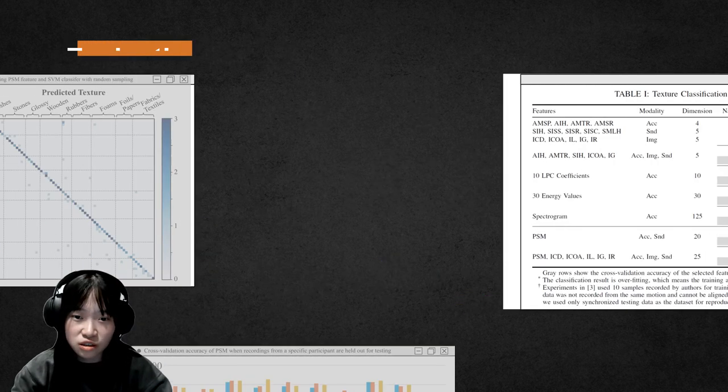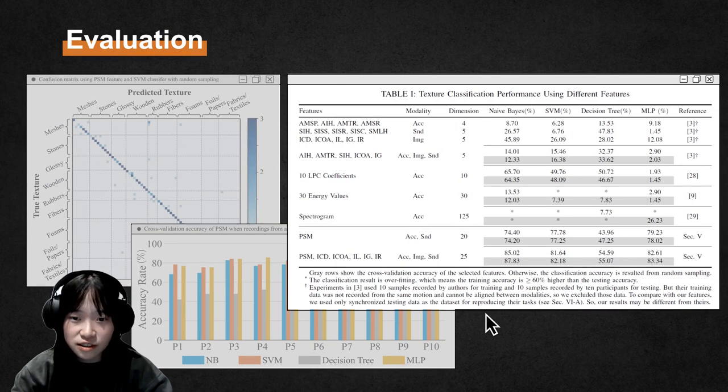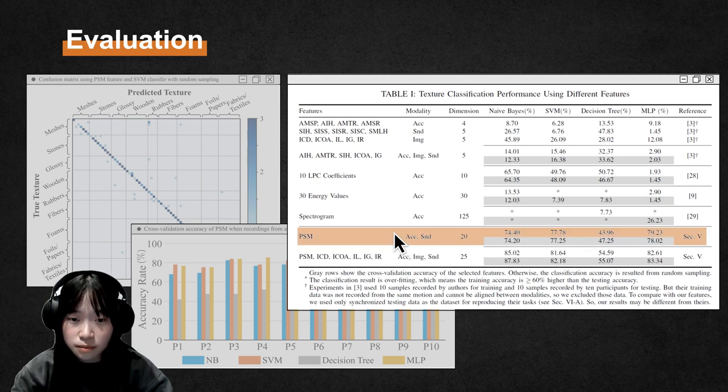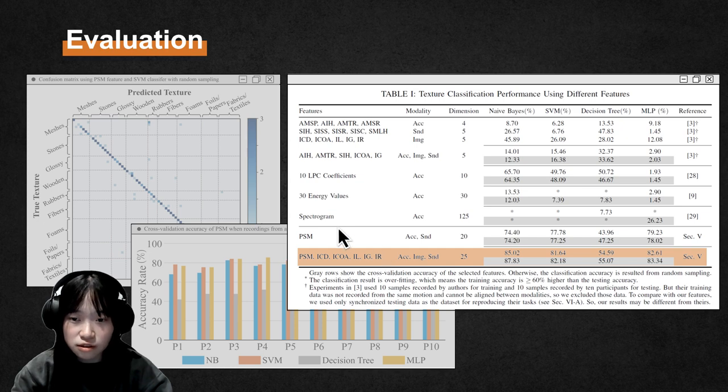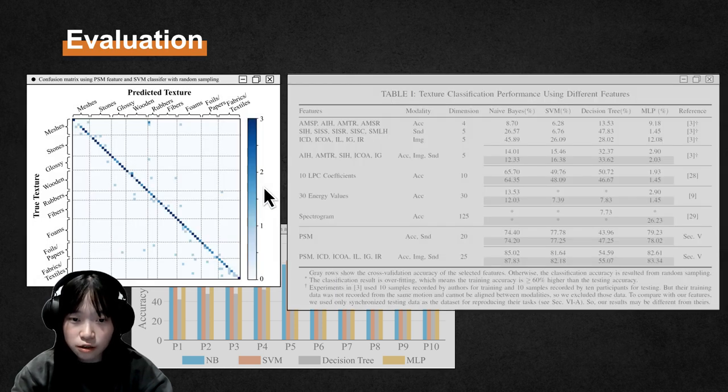For evaluation, we conduct a classification test for 69 textures from the LMT texture database. Compared to a variety of multimodal features from previous work, we achieved a higher 79% and 85% accuracy for the PSM feature and PSM with image features. Also, we achieved an overall 89% accuracy by categories.